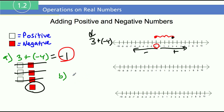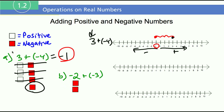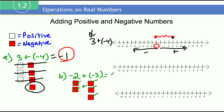Let me do another one: negative 2 plus negative 3. That means I need 2 red squares: 1, 2. And then I need 3 red squares: 1, 2, 3. For every positive and negative they cancel out, but here I don't have any positives — I only have all negatives. Since I'm supposed to add, I have 2 negatives and 3 negatives, giving a total of 5: 1, 2, 3, 4, 5. So that's negative 5.